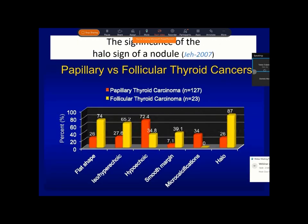I have mentioned several times that because the overwhelming majority of thyroid cancers are papillary tumors, the features of papillary cancer dominate our image of thyroid cancers. Papillary and follicular tumors behave quite differently for most suspicious signs, and the differences are statistically significant. These two types of cancers behave just the opposite, and this is the case also for the halo sign. The occurrence of halo sign in follicular cancers is more than three times higher than in papillary cancer.